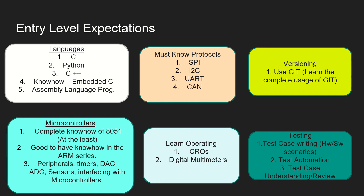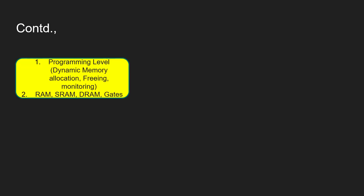One additional thing at the entry level: operating systems. Learn the fundamentals of operating systems. Though it is not at a real-time operating systems level where you can code and build systems with those features, at the entry level you need to know the OS fundamentals. So as an entry-level engineer, the checklist is: one programming language, must-know protocols, versioning, one microcontroller at least, CROs and multimeters as tools, operating system basics, and testing — all these together will help you.